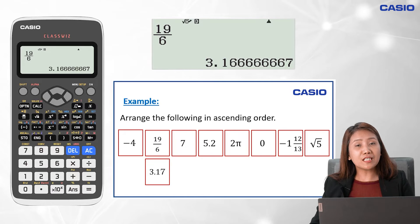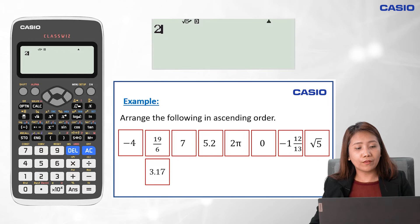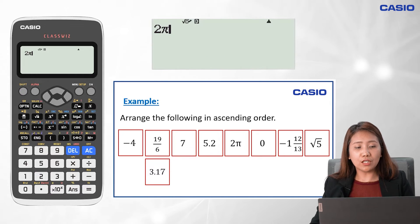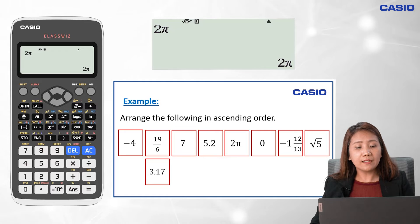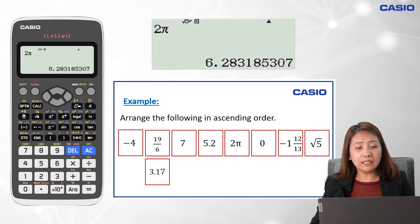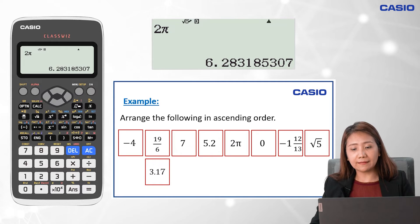This time, let's change 2π to decimal. We click on 2, followed by shift and the scientific notation key, press the equal sign, then click on SD to change the standard form to decimal. That gives us approximately 6.28.